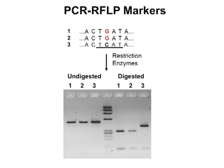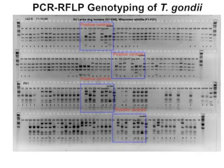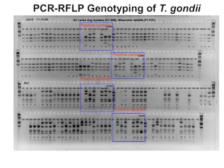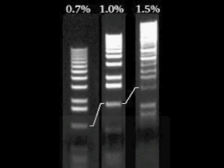The third step, digestion of nested PCR products by restriction enzymes, is used to reveal polymorphisms of DNA sequences among different strains of Toxoplasma gondii. Genetic markers were developed based on DNA sequence polymorphisms among reference strains, and these markers are used to identify unknown strains. Gel electrophoresis is used to separate DNA fragments by molecular size. Agarose gel is a porous matrix; the size of the pores is determined by the concentration of agarose. A large pore size is best for separating large DNA molecules, and a small pore size is best for separating small DNA molecules.